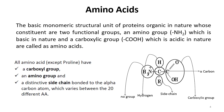Amino acids are the basic monomeric structural unit of proteins; they are organic in nature and consist of two functional groups. One of them is an amino group and the other is a carboxylic acid group. The amino group is basic in nature because it can donate an electron pair, and carboxylic acid is acidic in nature. Compounds having both an amino group and a carboxylic acid group are called amino acids.